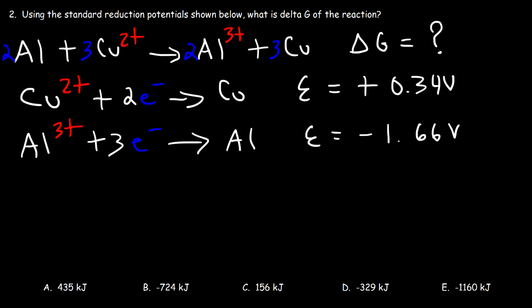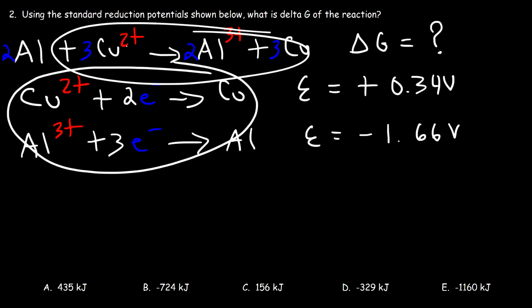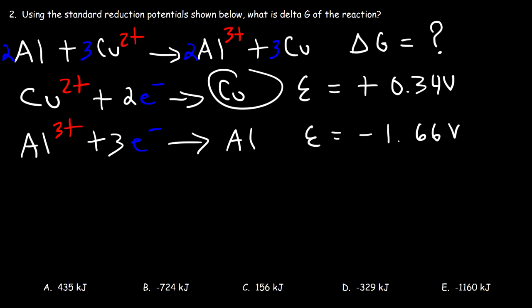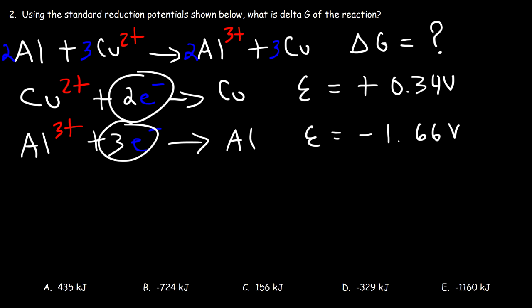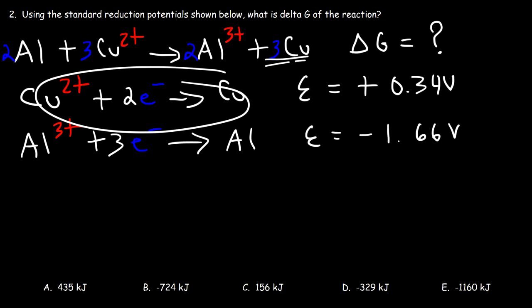Number two: using the standard reduction potentials shown below, what is delta G of the reaction? We need to combine these equations so they add up to the overall reaction and find the cell potential. Notice that aluminum is on the left side of the target reaction but on the right side in the given equation, so we need to reverse that reaction. For copper, it's already on the appropriate side. We need the number of electrons to be equal: 2 times 3 is 6, so we multiply the aluminum reaction by 2 and the copper reaction by 3.